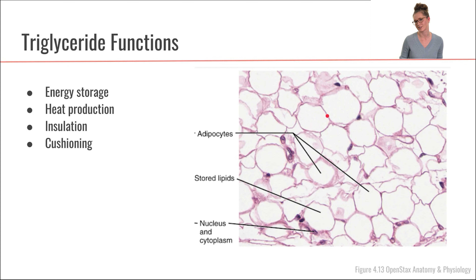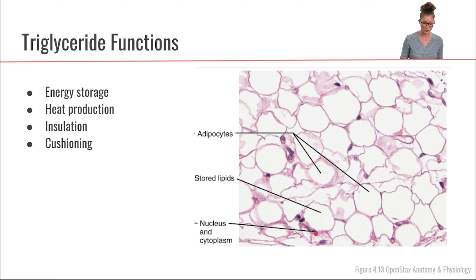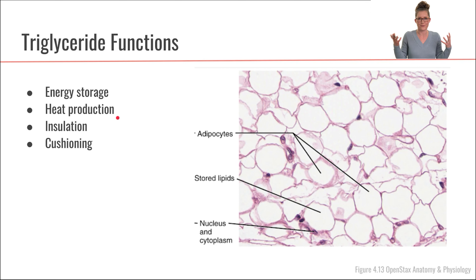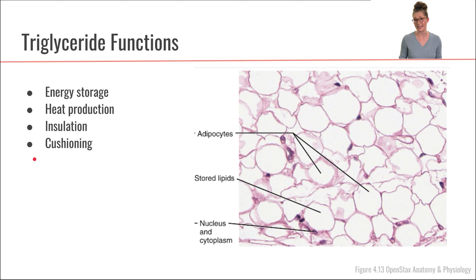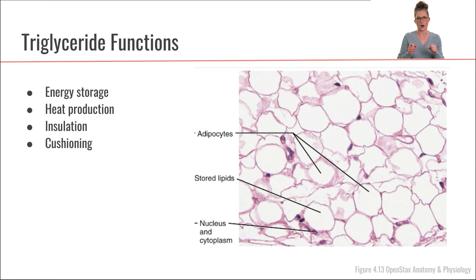In this picture, we're looking at some adipose tissue. These big white open spaces are not empty at all — they are full of triglycerides, the lipid droplets within the adipocytes. The darker staining shows other organelles like the nucleus. Another function of triglycerides is heat production, and since they fill our adipocytes, adipose tissue is also really important for insulation — keeping heat inside our bodies and cushioning our organs so they aren't bouncing around.